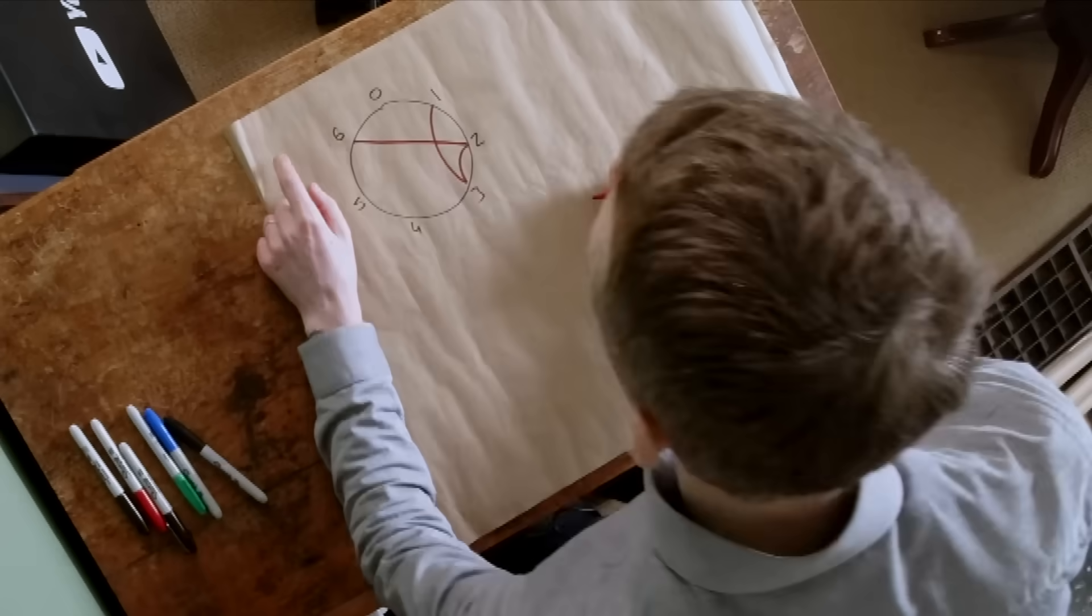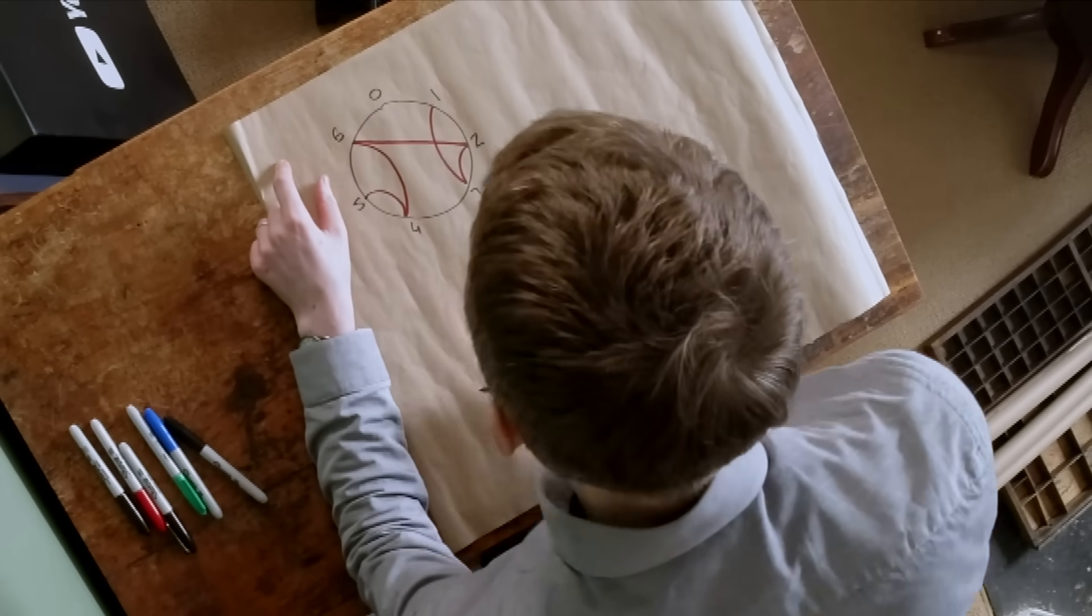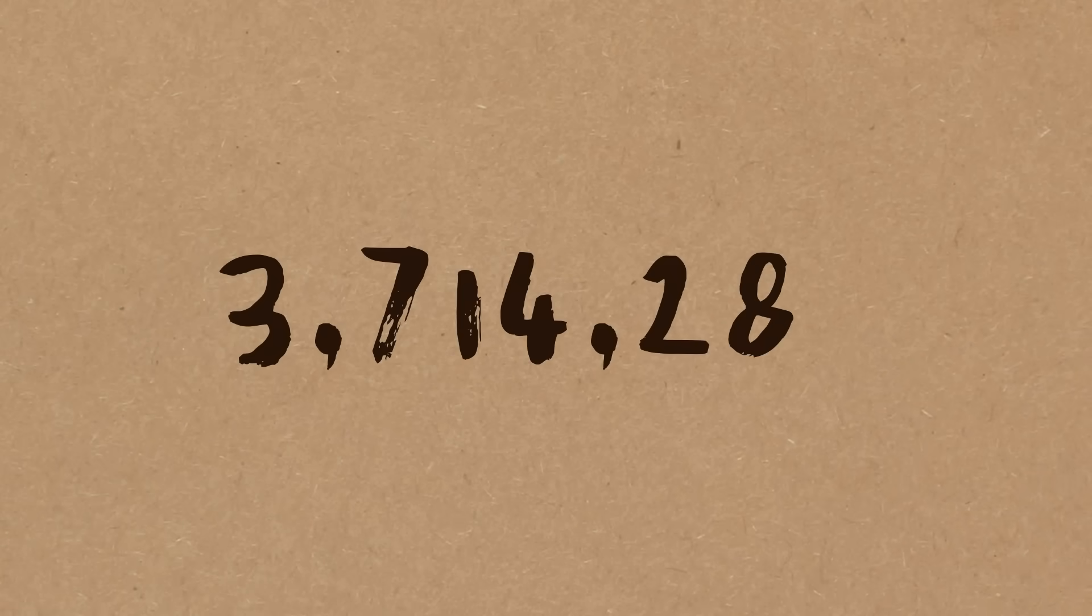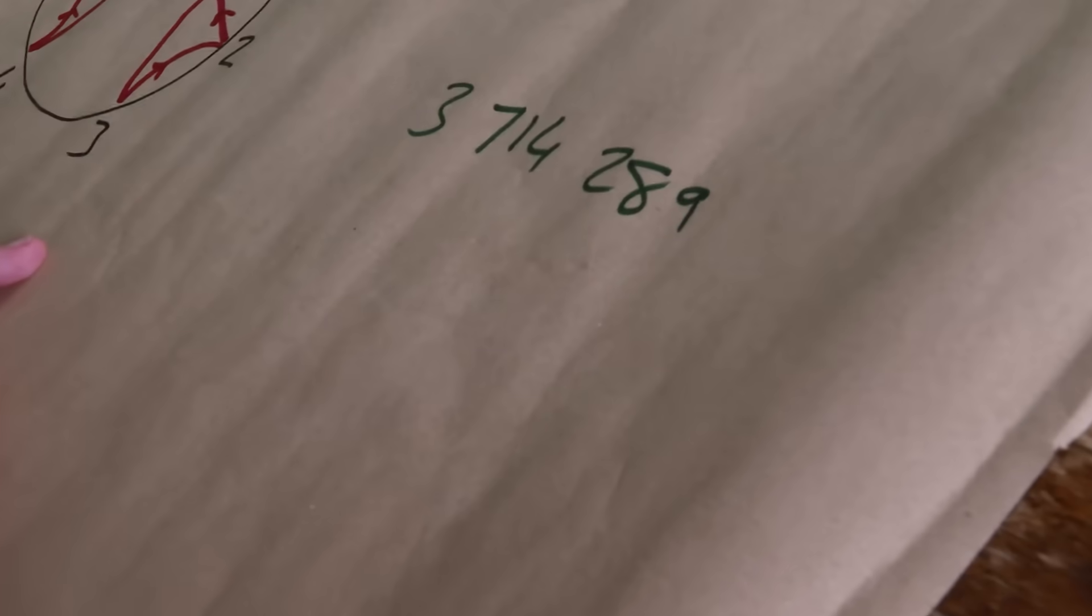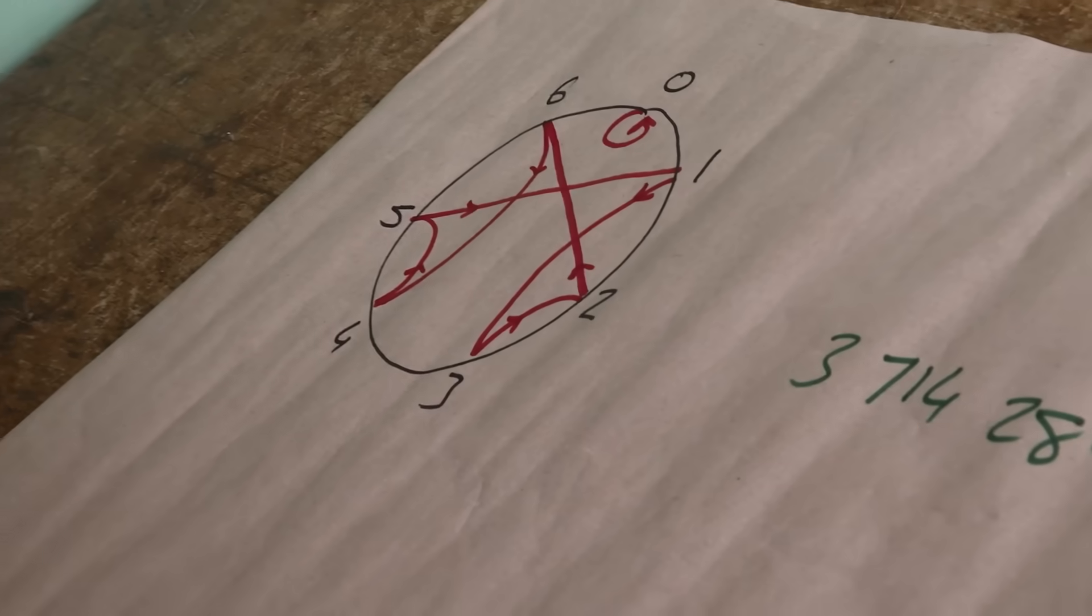This even works for really big numbers, so I want to ask Brady for a really big number. Let's do something in the millions. Three, seven, one, four, two, eight, nine. So that is three million seven hundred and fourteen thousand two hundred and eighty-nine. I do not know if that number is divisible by seven, but we're going to work it out using this picture here.